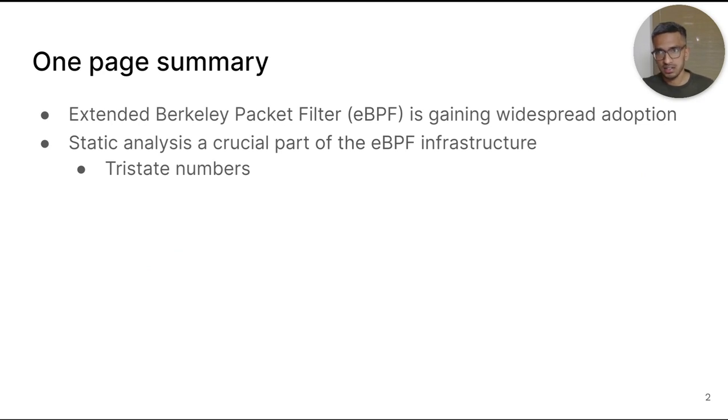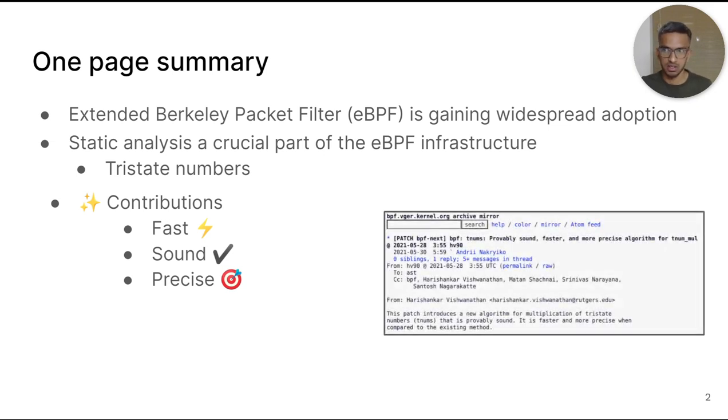Static analysis is crucial to the safety and viability of EBPF. EBPF performs static analysis using several abstractions. We study the domain of tri-state numbers. Our work improves the speed, precision and soundness of EBPF static analysis using tri-state numbers. We present a new algorithm that is faster and more precise than the existing algorithm in the kernel. It has been merged in the latest Linux kernels. We also prove that the other algorithms in this domain are sound and maximally precise.